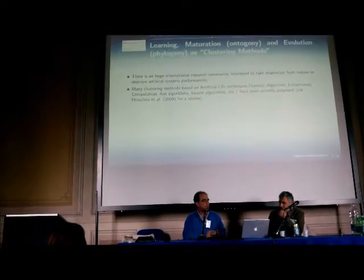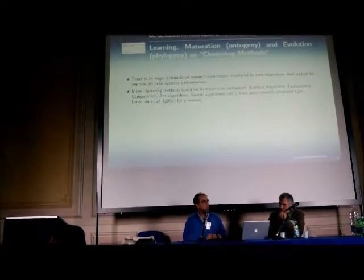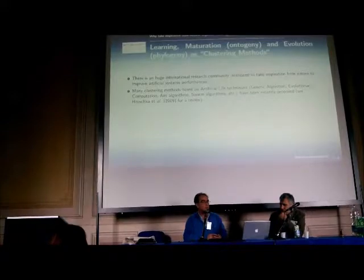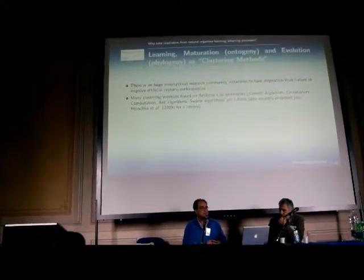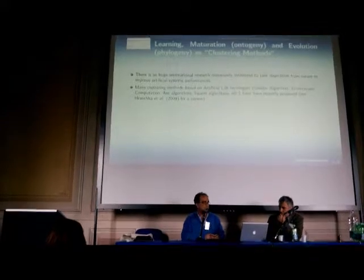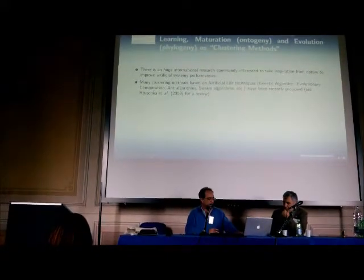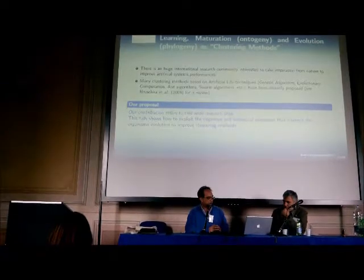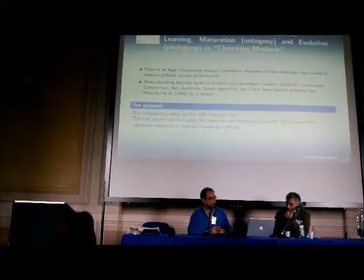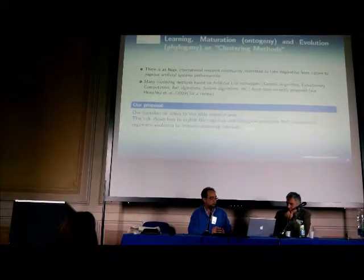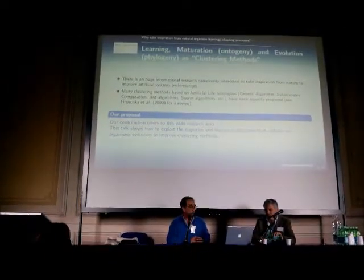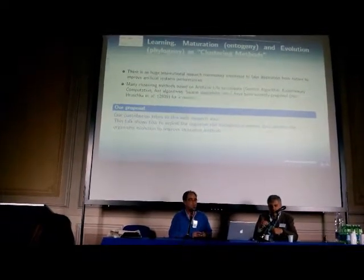We can have different adapting processes. We have learning — meaning behavior produced by experience or manipulation — and development or evolution, which is phylogenetic: species evolving as in Darwinian evolution. Our proposal is to use this large body of knowledge from nature, computer science, and artificial life to improve the classical clustering methods.